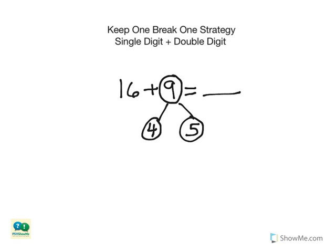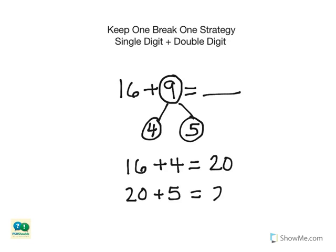Now we can add each of the smaller numbers to the whole number that we kept. Start with the combination that you know: 16 plus 4 equals 20. Now add the second number: 20 plus 5 equals 25.